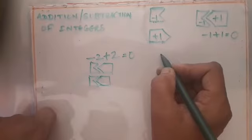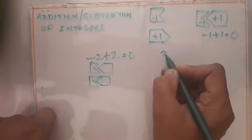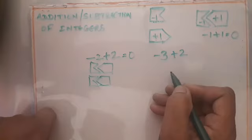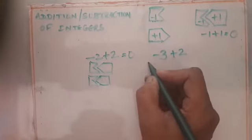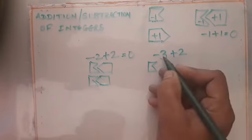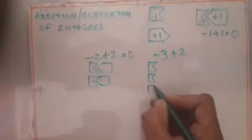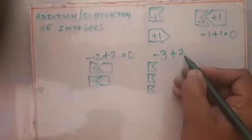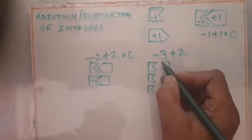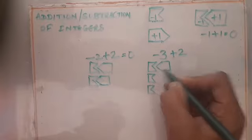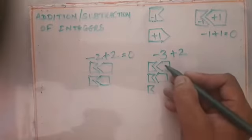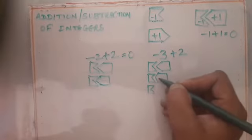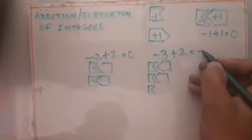Say you are given minus 3 plus 2. When you represent it through the figure, you have three minus-type symbols: minus 1, minus 2, minus 3, and two plus-type symbols: 1 and 2. These two symbols get interlocked, but one minus-type symbol still remains — that is minus 1.